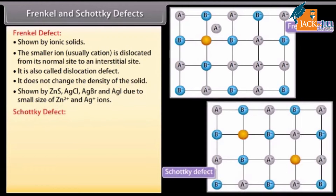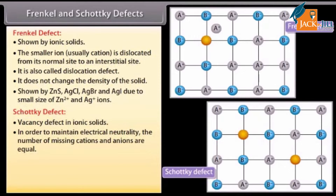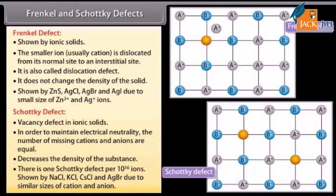Schottky defect is a vacancy defect in ionic solids. In order to maintain electrical neutrality, the number of missing cations and anions are equal. This decreases the density of the substance. There is one Schottky defect per 10¹⁶ ions. It is shown by NaCl, KCl, CsCl, and AgBr, due to similar sizes of cation and anion.